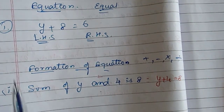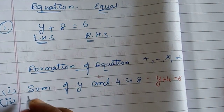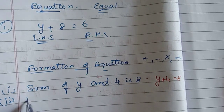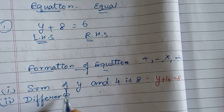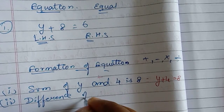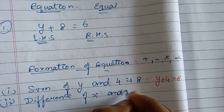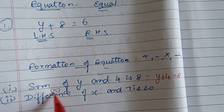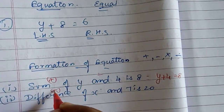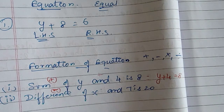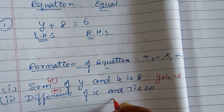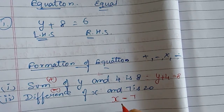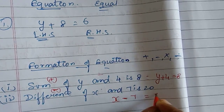If you want to add the next one, we will add the sum. The sum is equal to plus, the difference is equal to minus. Difference of X and 7 is 20. So the difference means minus: X minus 7 is equal to 20.